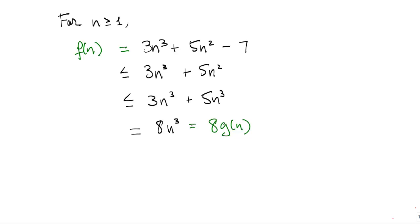As we proceed downwards, each expression is greater than or equal to the one that comes before. If each of these inequalities is true, then the first expression, which equals f(n), is less than or equal to the final expression, which equals 8 times g(n).